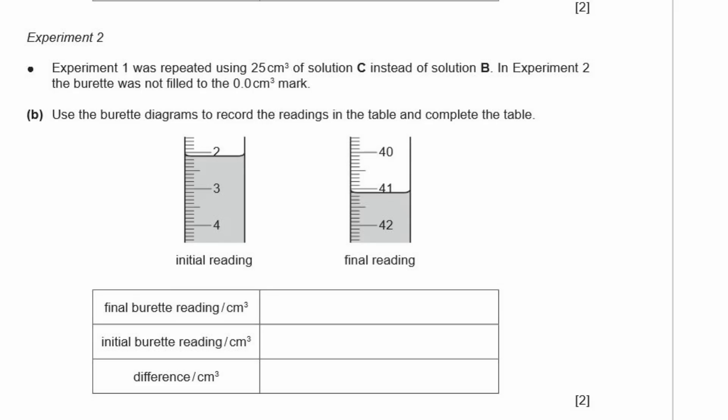Experiment two. Experiment one was repeated using 25 centimeters cubed of solution C instead of solution B. So just a different concentration of the iron two sulfate. In experiment two, the burette was not filled to the 0.0 centimeters cubed mark. B. Use the burette diagrams to record the readings in the table and complete the table. Okay. So the initial reading here is 2.1 centimeters cubed. And that goes in this, the second line. Be careful because it's easy to put initial in the first box just because that makes sense. Read what the headings are. Okay. And the final reading is 41.1. Alright. So 41.1 minus 2.1. That is 39.0. Alright. So let's keep going.